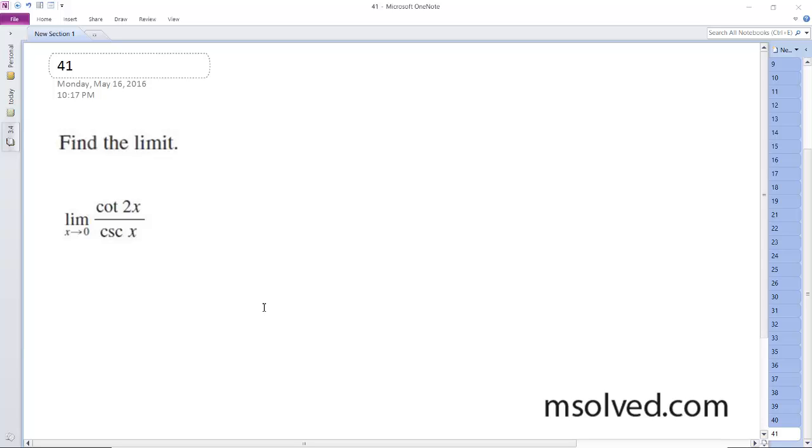Find the limit of the cotangent of 2x over cosecant of x. For this, break this down.